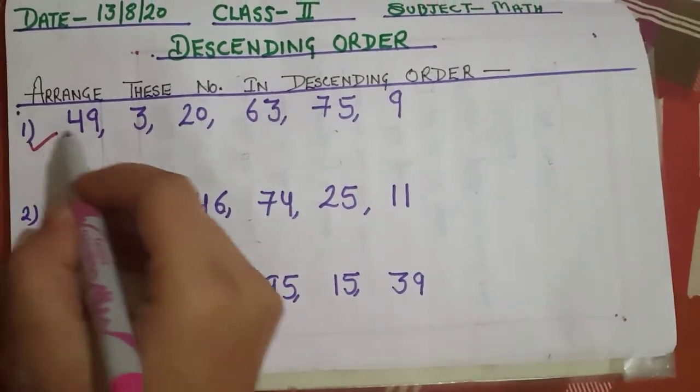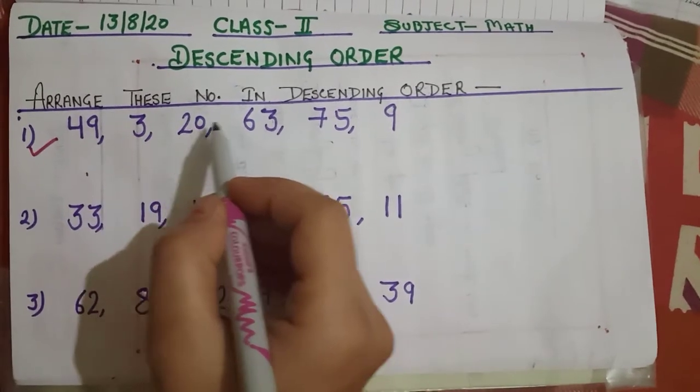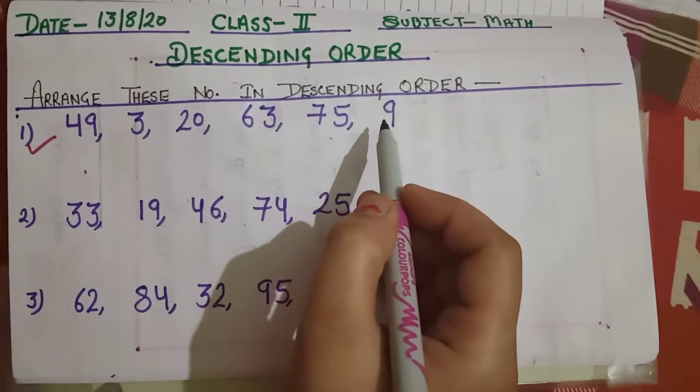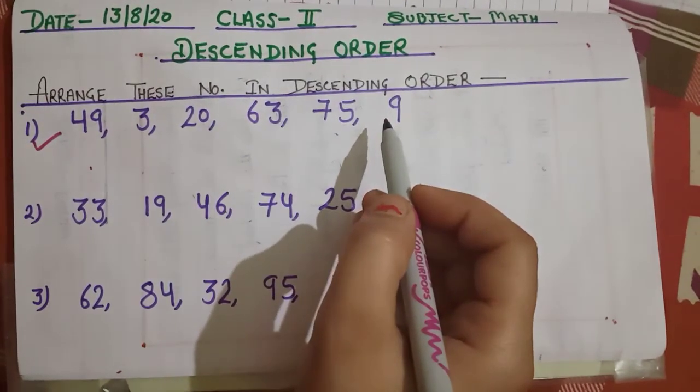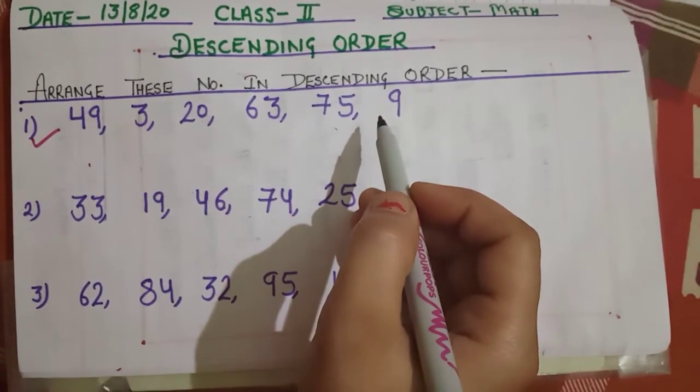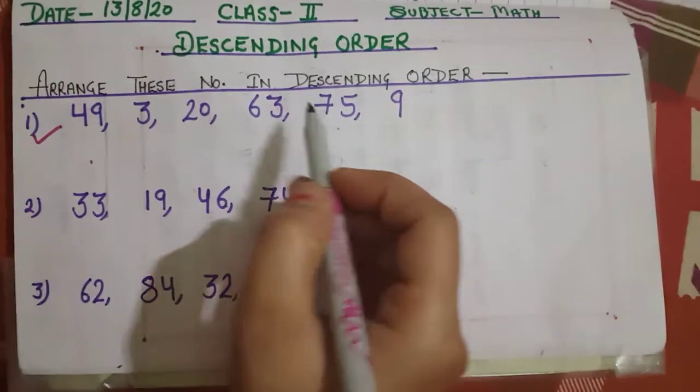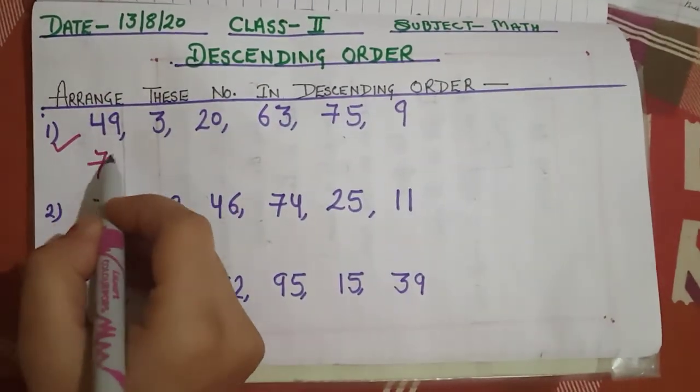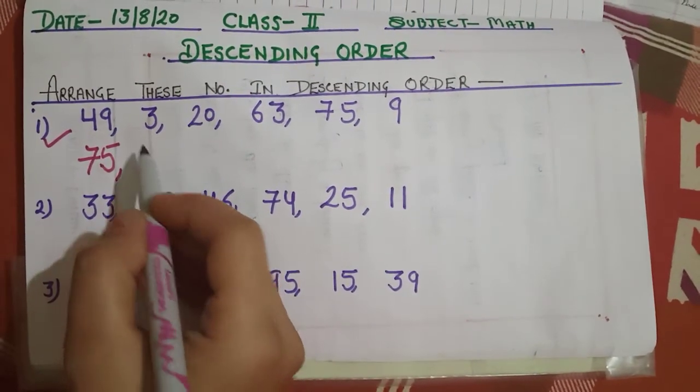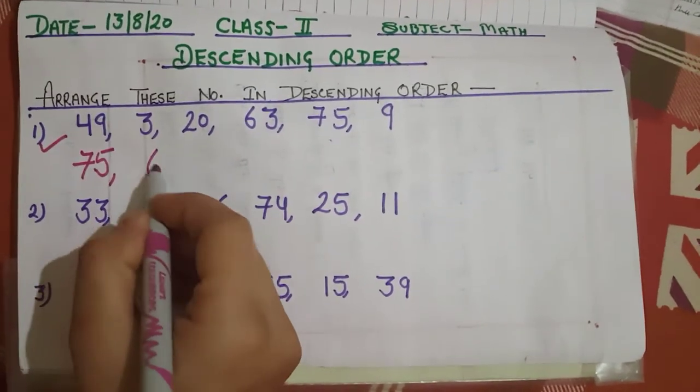Now your first sum is 49, 3, 20, 63, 75, and 9. Let us find out the greatest number. Which is the greatest number? Yes, 75. And which number will come after 75? Yes, 63.